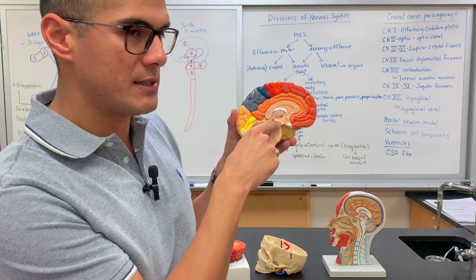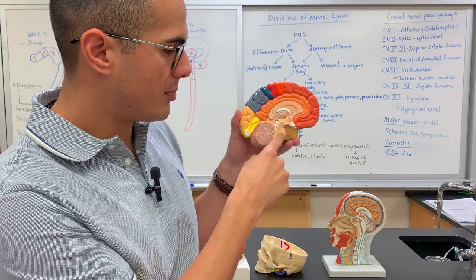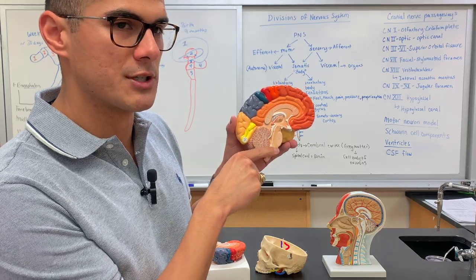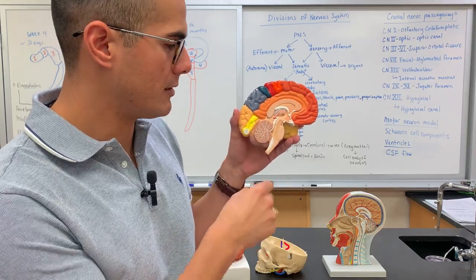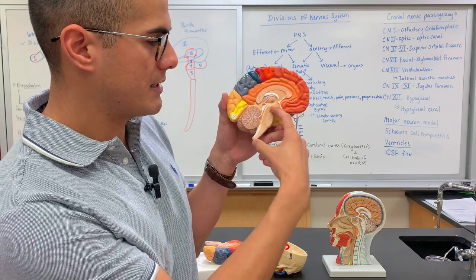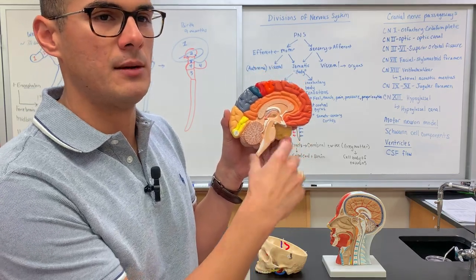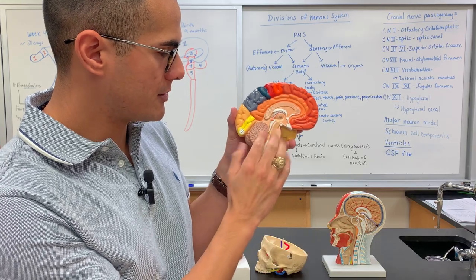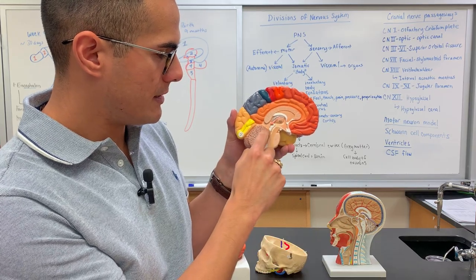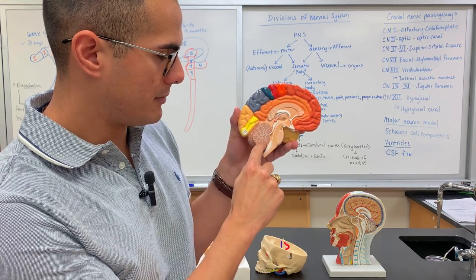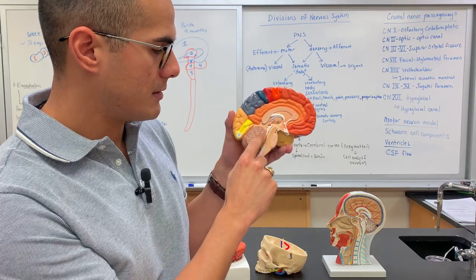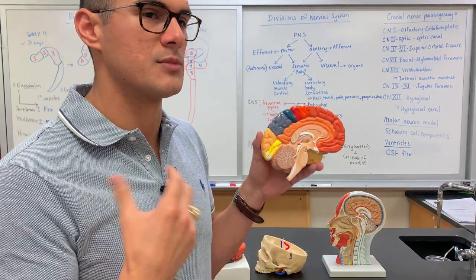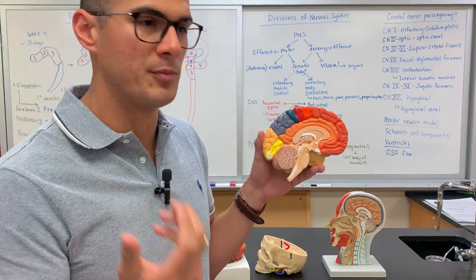This is where the midbrain is. You have the midbrain, the pons, and then the medulla oblongata — or just the medulla for short. These structures make up the brain stem. The cerebellum is what's responsible for coordinating smooth, controlled movement.